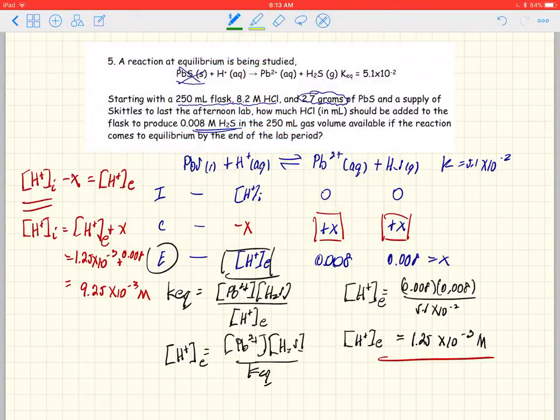Now, the problem asks how much HCl in milliliters. We know we need that molarity. So what we want to do is convert from molarity and volume into moles. So this is 9.25 times 10 to the minus 3 moles per liter.